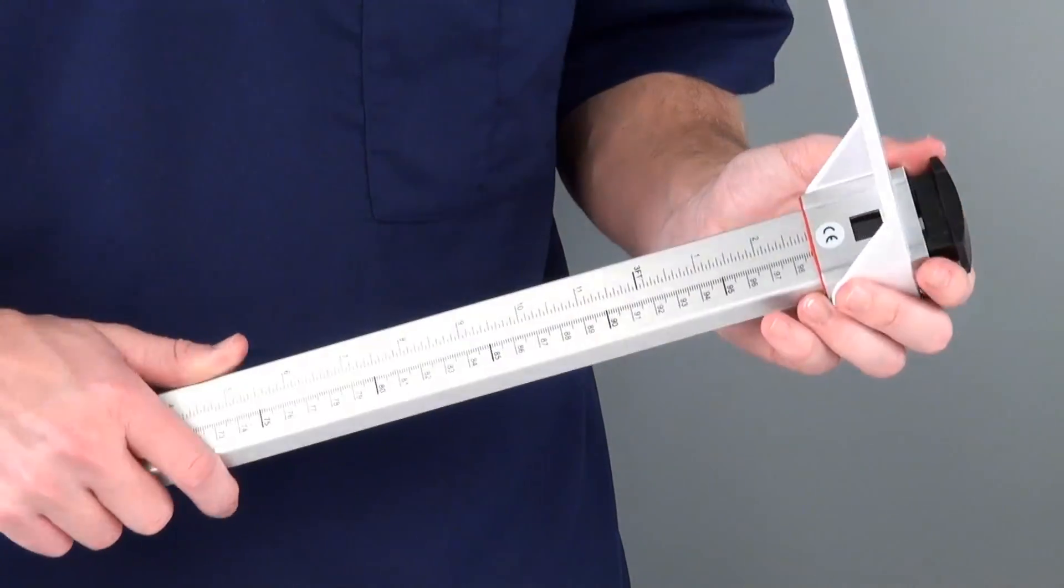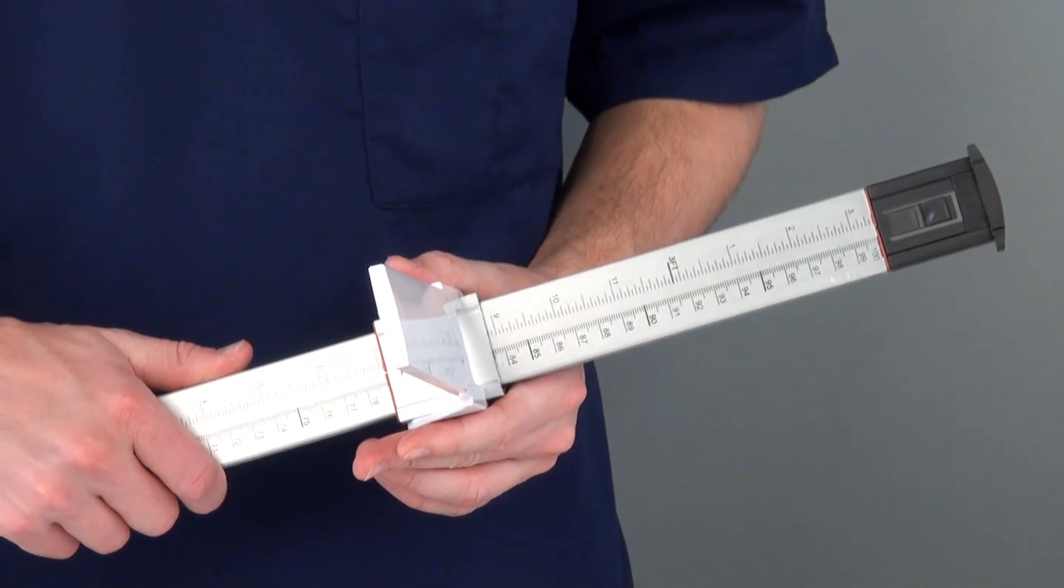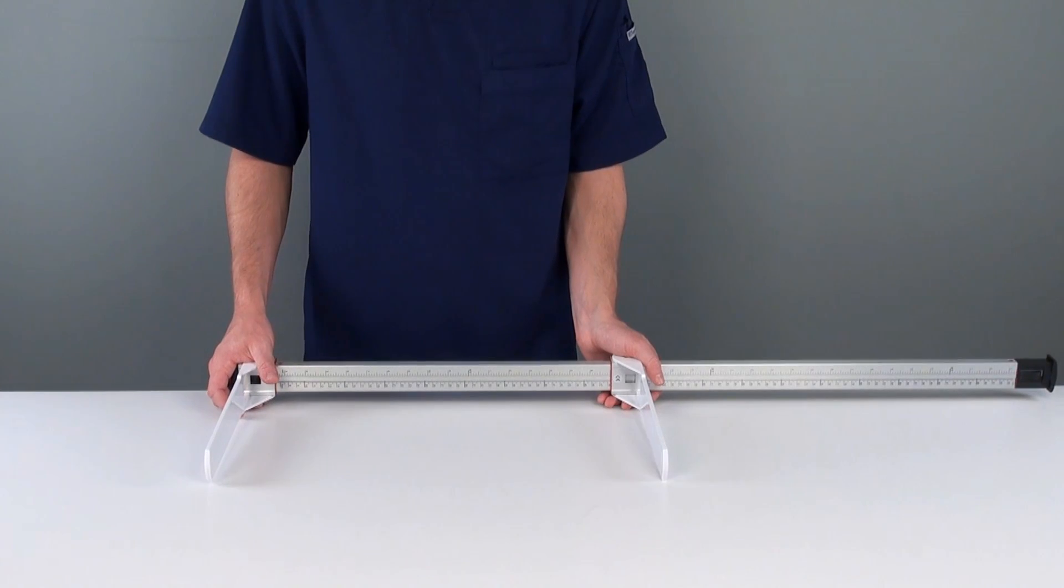Fold out the stadiometer's calipers located on either end of the measuring bar, extending them into place, one end against the top of the young patient's head and the other against the soles of their outstretched feet.